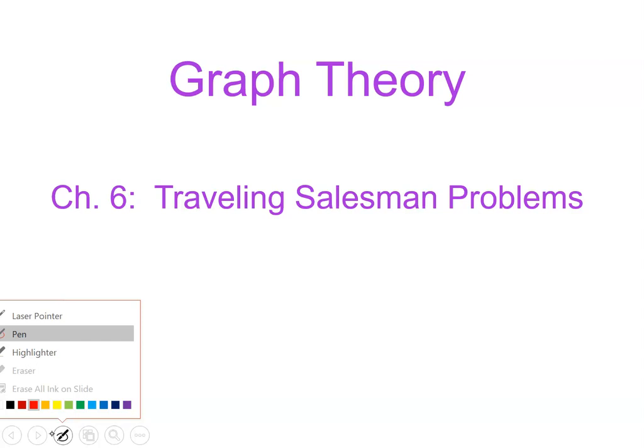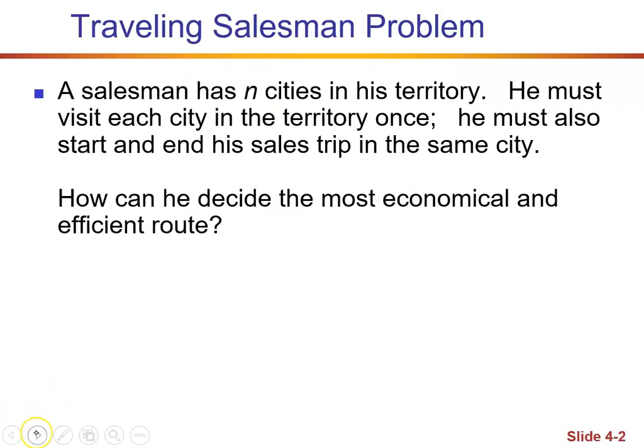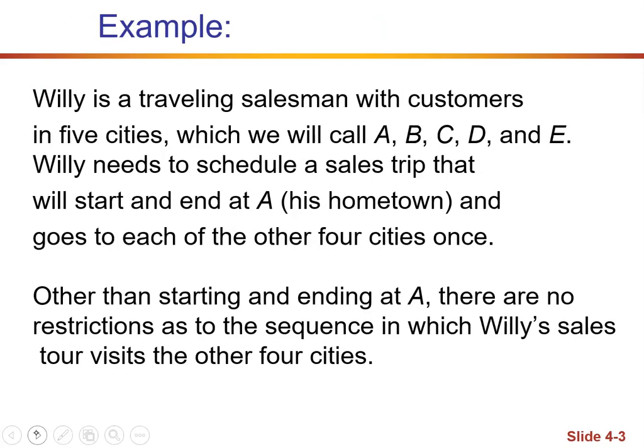We're in chapter six. So what is the traveling salesman problem? The salesman has N cities in his territory. He must visit each city in the territory once. He must also start and end his sales trip in the same city. How can we decide the most economical and efficient route?